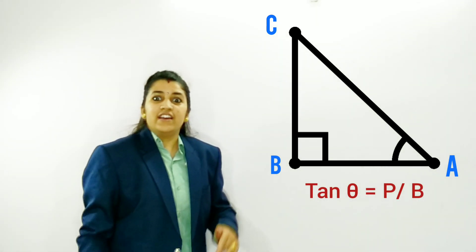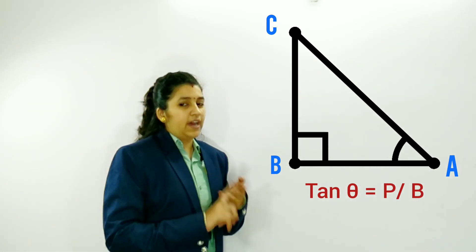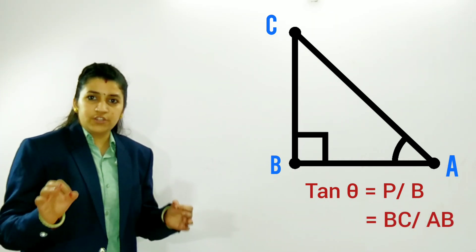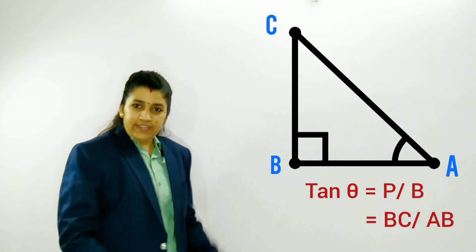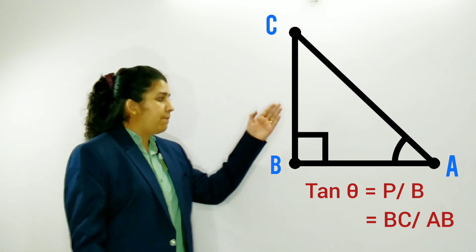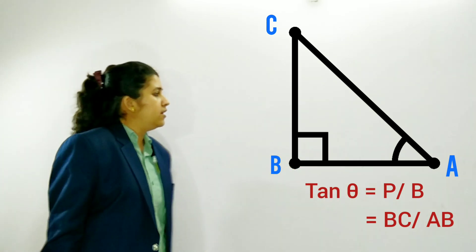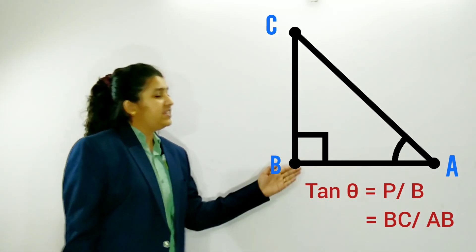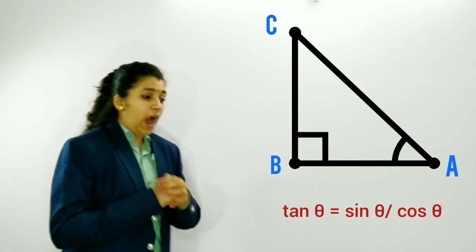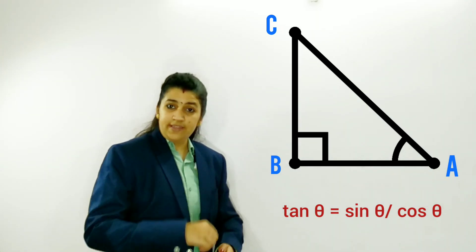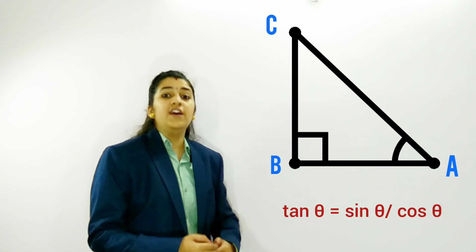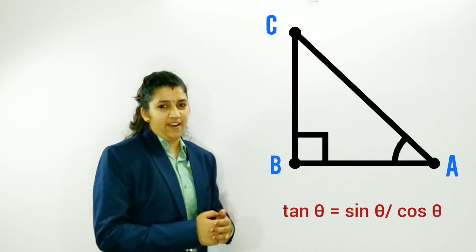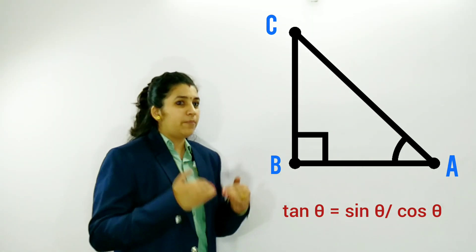Tan theta is actually related to sin theta and cos theta. If a student knows sin theta and cos theta, they would be able to calculate tan theta. Tan theta is the perpendicular upon base — here perpendicular is BC and the base is AB, so BC upon AB. Tan theta is also the ratio of sin theta upon cos theta.